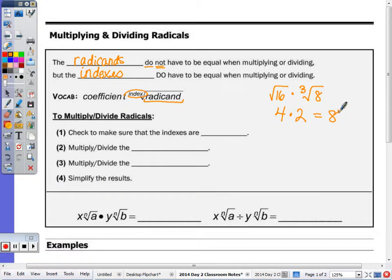But if you want to rewrite something in simplest radical form, we can't do that multiplication if they didn't have the same index. So step number one, to multiply and divide radicals, you first want to check to make sure that your indexes are the same.